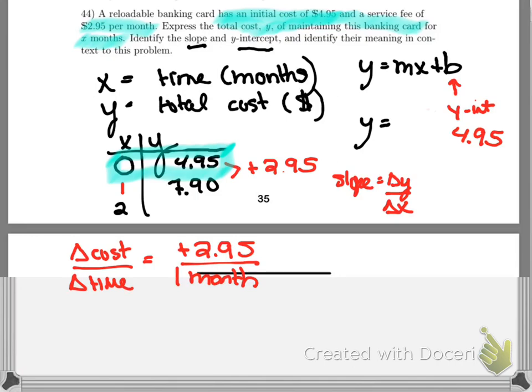$2.95 over 1, that's $2.95. And that is my slope, that is M.